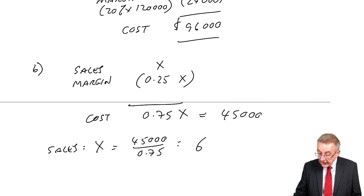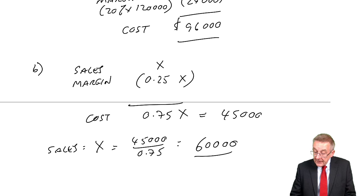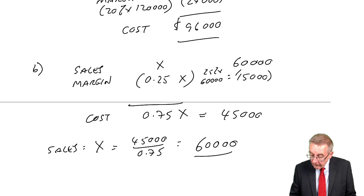And again, although, don't waste time checking in the exam. You won't have time. It's wasting time. But it does check. Because if the sales are 60,000, the profit, 25% of 60,000 is 15,000. And so, again, the cost must have been 45,000.